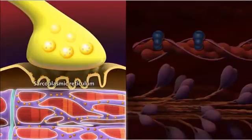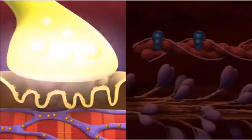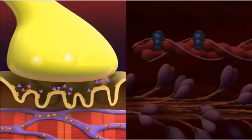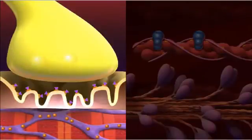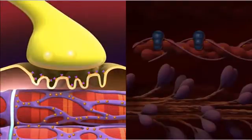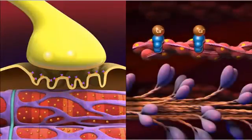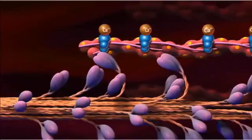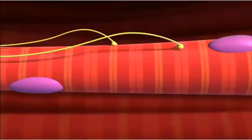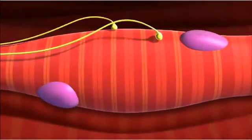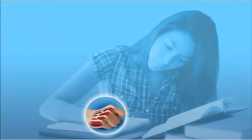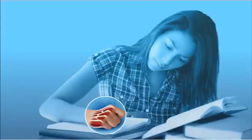Calcium ions are stored in the sarcoplasmic reticulum and are released in response to signals from the nervous system to contract. Neurotransmitter molecules are released from a neuron and bind to receptors, which depolarizes the membrane of the muscle fiber. The electrical impulse travels down the T-tubules and opens calcium stores. Calcium ions flow to the myofibrils, where they trigger a muscle contraction. As the actin and myosin slide along each other, the entire sarcomere shortens as the Z-lines draw closer to the M-line. As the sarcomeres in myofibrils contract, the entire muscle fiber will shorten. When muscle fibers contract in unison, a muscle can produce enough force to move the body, allowing you to take notes.